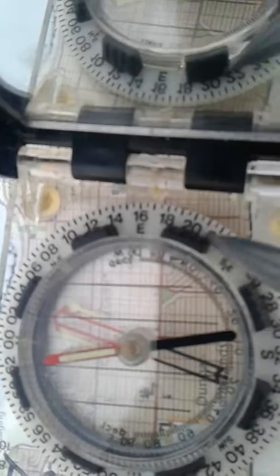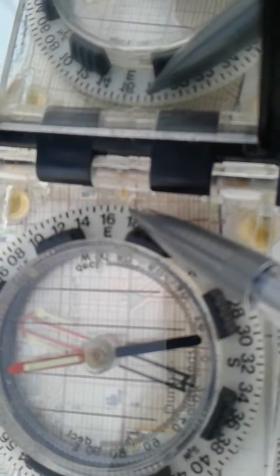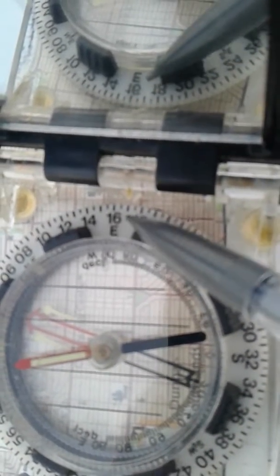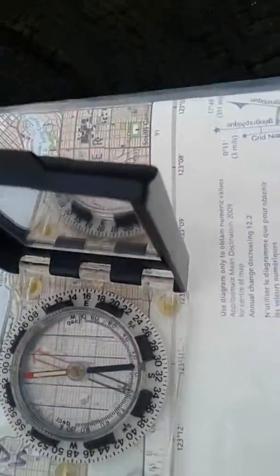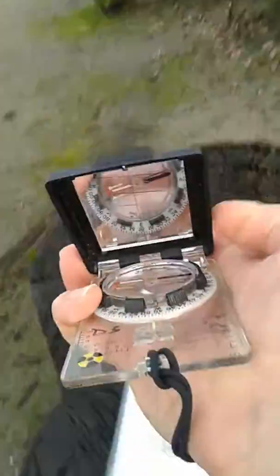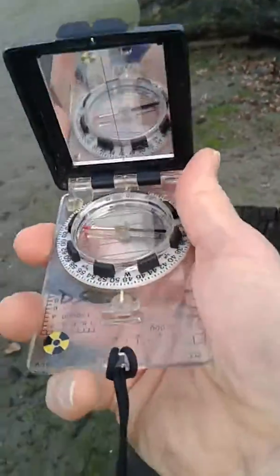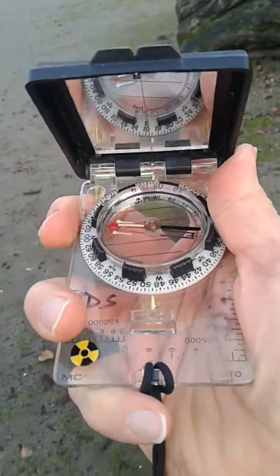At the top here I have 15... what do we got here at the top? I've got 1700 mils. So I pick up my compass and I want the dial so you can see in the mirror here.